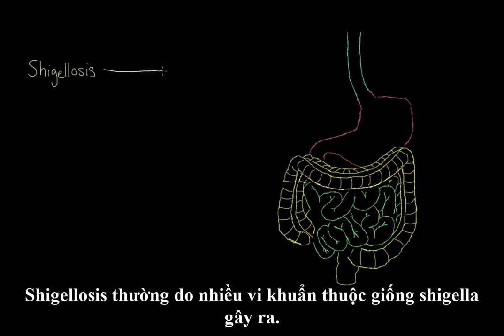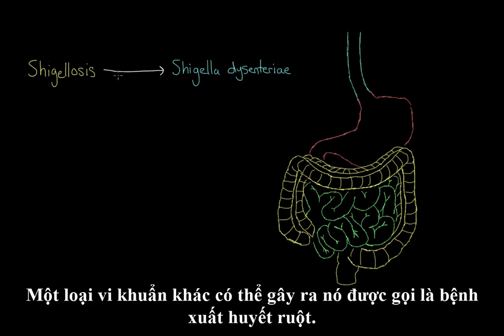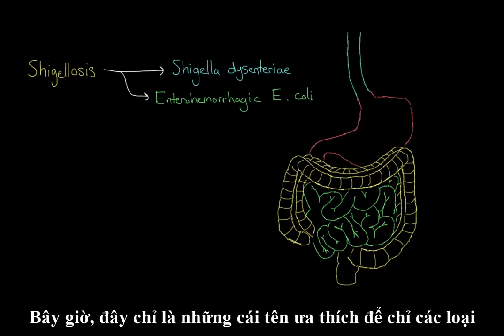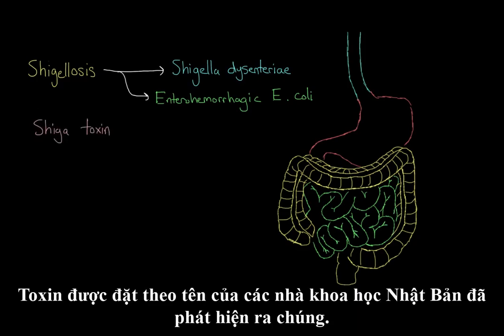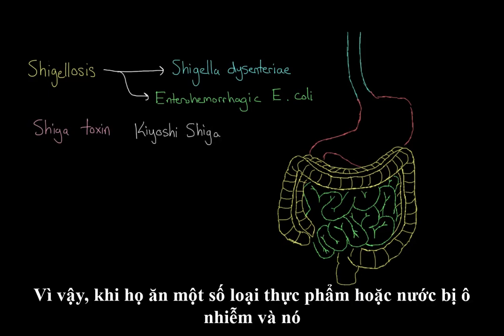Shigellosis is often caused by many bacteria of the Shigella genus. One of the most common bacteria that causes it is Shigella dysenteriae. Another bacteria that can cause it is called Enterohemorrhagic E. coli. Now these are just fancy names to refer to different types of bacteria, but in general both of them produce a toxin known as the Shiga toxin, named after the Japanese scientist who discovered them, Kiyoshi Shiga.